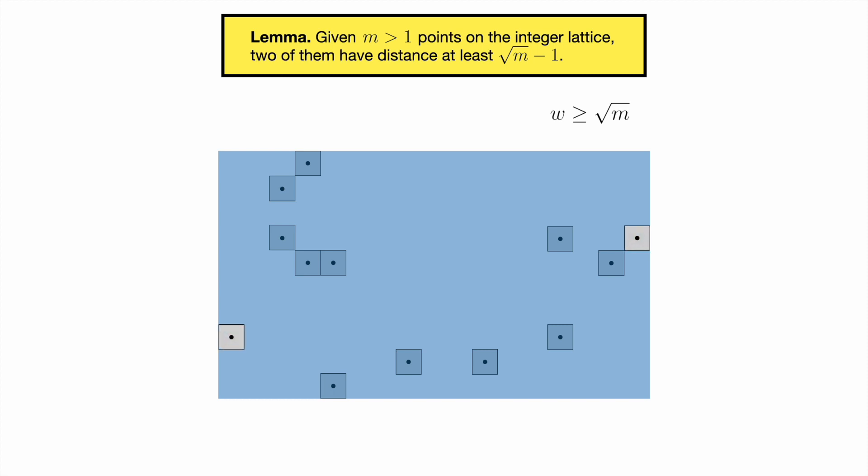Together, these squares have less area than the rectangle, and it follows that the width of the rectangle is at least square root m. Now take two squares that touch opposite sides of this rectangle. The horizontal distance between the centers of these squares is one shy of the rectangle's width. It follows that these points are at least square root m minus 1 apart, meaning our lemma is true.